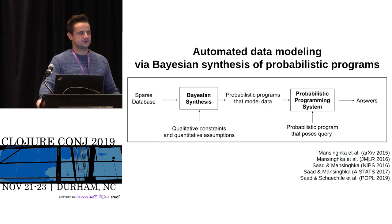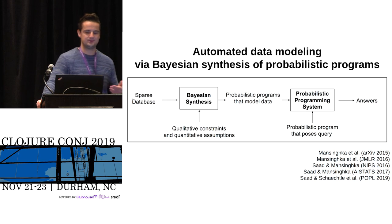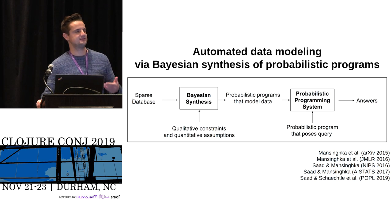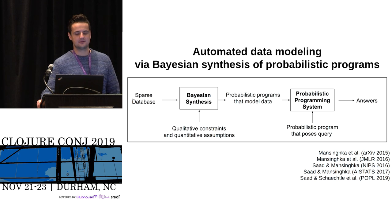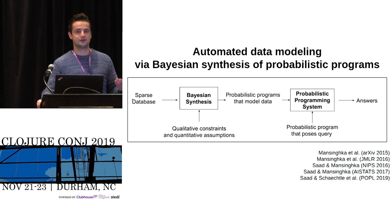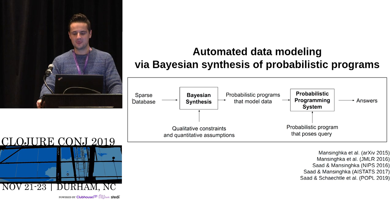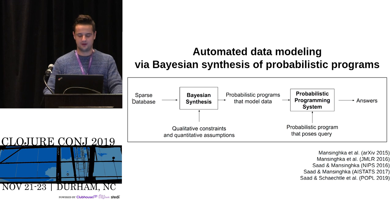That's where automated Bayesian data modeling comes in. We use an algorithm called Bayesian synthesis, where we input a sparse data table along with qualitative and quantitative constraints. That algorithm outputs not just one but an ensemble of probabilistic programs. Those programs can then be queried using the query language — either the SQL-like query language or the Clojure implementation — to get answers.